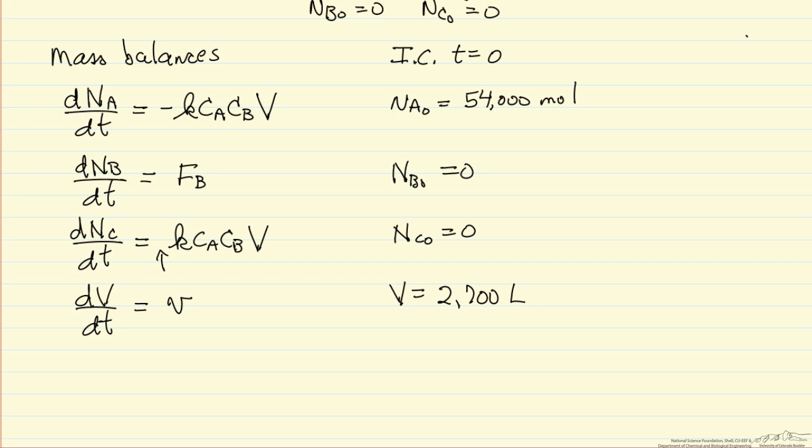In order to solve these equations with these initial conditions, we'll need some additional equations. We need to define CA, since that appears in the rate expression. It's the number of moles of A over volume, where both the number of moles of A changes with time and the volume changes with time. Likewise, CB is the number of moles of B with respect to volume.